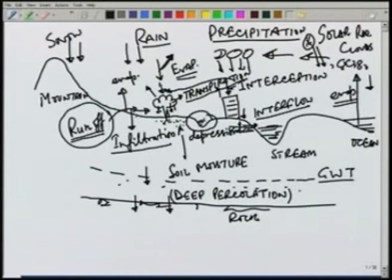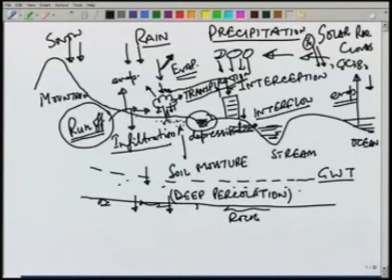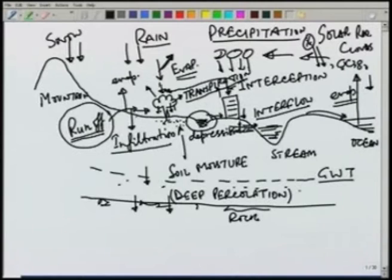The depressions on the ground surface will also store some of the precipitation. Before the runoff can start, we should have some storage in the depression — that is also counted towards losses. Once we have precipitation, we will have some depression storage. Once we fulfill all these depression storage requirements, there will be runoff over the surface going to the streams. Finally, the streams will runoff to the ocean, from which it will be evaporated back and this whole cycle will repeat.